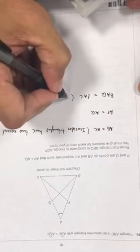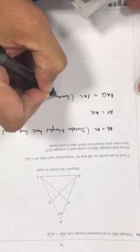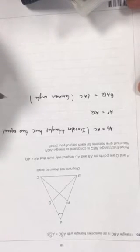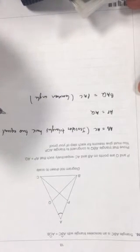So what that means is we've got a common angle. So because we've got a common angle, it means we've got two sides of the same length and the common angle, which is the same.